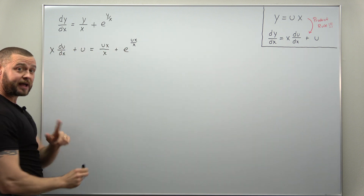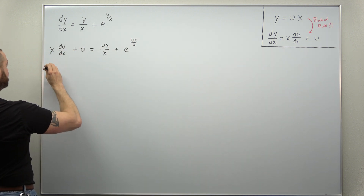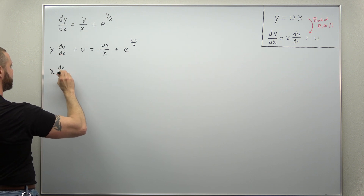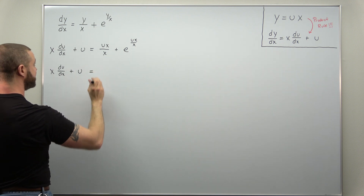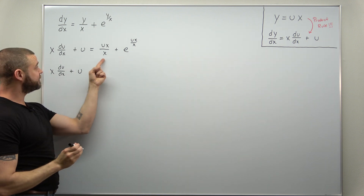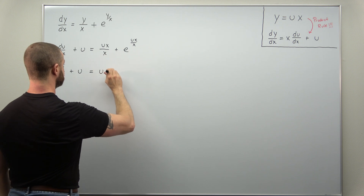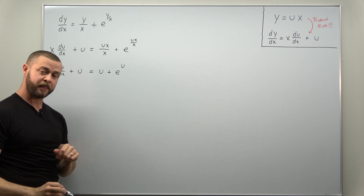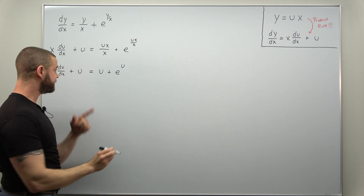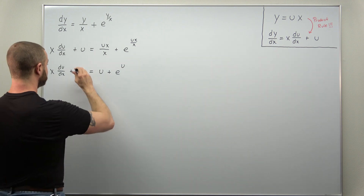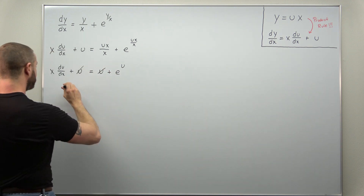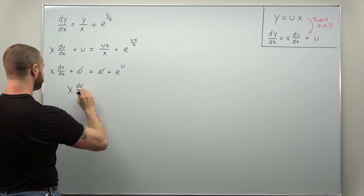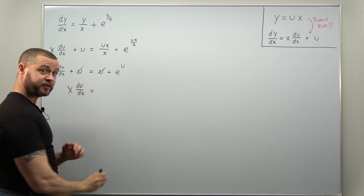Notice you can cancel out the x's here and in the exponential. The differential equation becomes x times du over dx plus u on the left side, and the right side simplifies to u plus e to the u — the x's cancel there. Continuing to simplify, the u's subtract out and we're left with a really simple differential equation: x times du over dx equals e to the u.